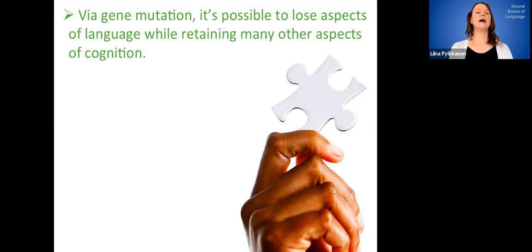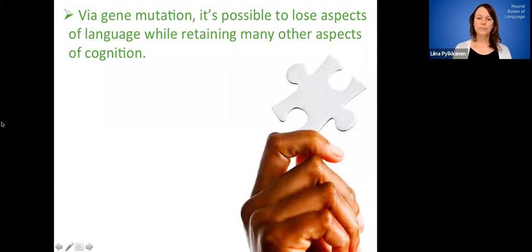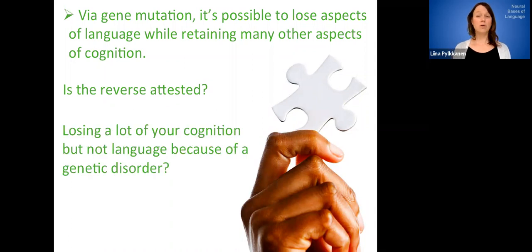Okay, so here we've learned that by a gene mutation, it's possible to lose aspects of language while retaining many other aspects of cognition. That's kind of what we learned from the K family and to extent from the rest of the SLI population as well, even though the genetic basis is not understood as well. So that kind of makes you wonder whether the reverse could be attested. So would it be possible to lose a lot of your cognition but kind of retain language because of a genetic disorder? Do we see the dissociation in the other direction?